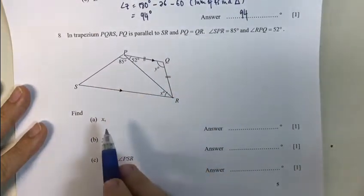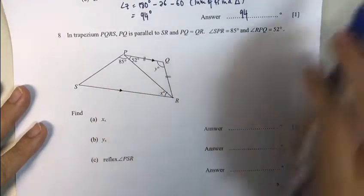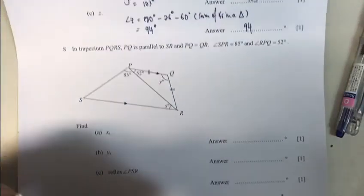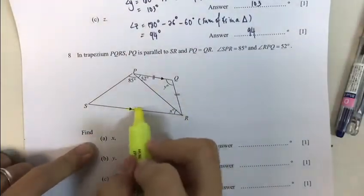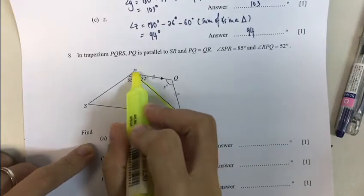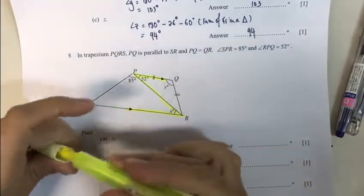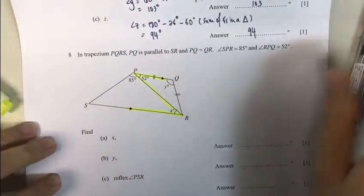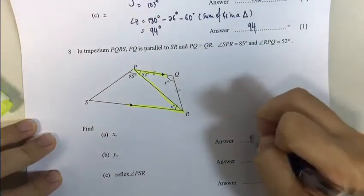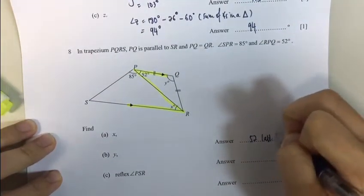I have 52, 85. Let's find angle X. Angle X. So my parallel line, what does it tell me? This is Zorro, that's right. 52 degrees. Alternate angles.